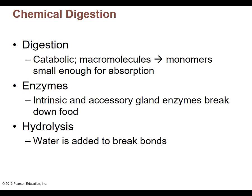Digestion itself is a catabolic reaction. Catabolism breaks things down from macromolecules — large things — to smaller molecules, or singular molecules, into monomers. We need to break things down into small enough pieces that we can actually absorb them. We have lots of enzymes, both intrinsic and accessory gland enzymes, that break all the food down. What the enzymes do is called hydrolysis — they add water to different molecules, and the water breaks apart the bonds, breaking large molecules down into small molecules.